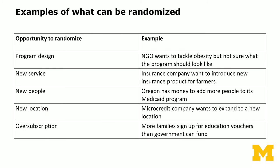Let's take a look at some examples of what can be randomized. If an NGO wants to tackle obesity but isn't sure what the program should look like, they can randomize on different aspects of program design and offer multiple programs. Sometimes you have new services; for instance, an insurance company introducing new insurance products for farmers can randomize a subsample of farmers to be exposed to the new insurance programs to compare them to the old ones.